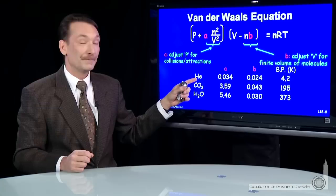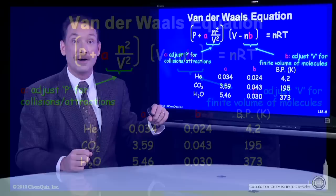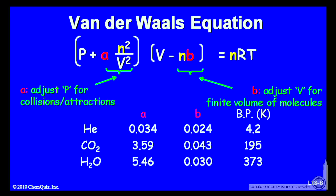Let's look at some of these A and B parameters. Here's helium. Its A and B parameters, both very small. And as you'd expect, helium behaves like an ideal gas. It has a very low boiling point.